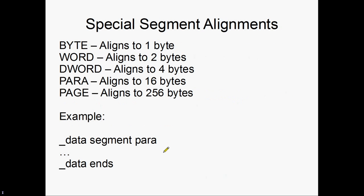Usually you'll want 16 there. MASM provides some keywords for common alignments: byte means align to one, which is pretty useless — it means don't align it at all. You can say word, dword, para, or page to mean 2, 4, 16, or 256 bytes respectively. Usually you'll want para, which is exactly the same as saying align 16. So usually your segments will be aligned to 16, or just .data is what you'll put there.